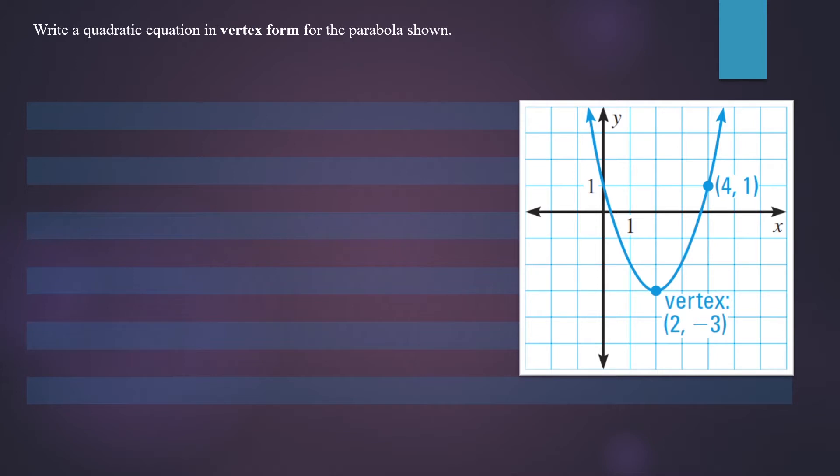The first thing we note is that our graph is opening in the upwards direction, and we are given the vertex (2, -3). So the standard form for this parabola is y minus k equals a times (x minus h) squared, where the vertex is (h, k).